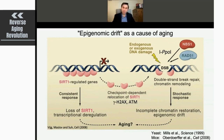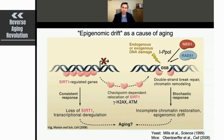We use the I-PpoI enzyme because it doesn't cut very often — there are only about 18 consensus sites across the genome. It does cut the rDNA, which we had to be careful about so we weren't just trashing the genome, but it's been very useful because it stimulates a very mild damage response. In fact, it's so mild you can barely detect activation of these factors by western blot — you won't see p53 activated, for example. We call it 'chromosome tickling' to distinguish it from other types of study.